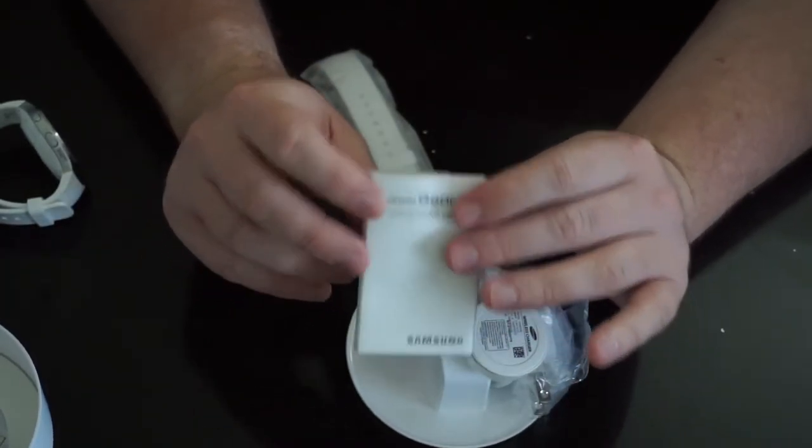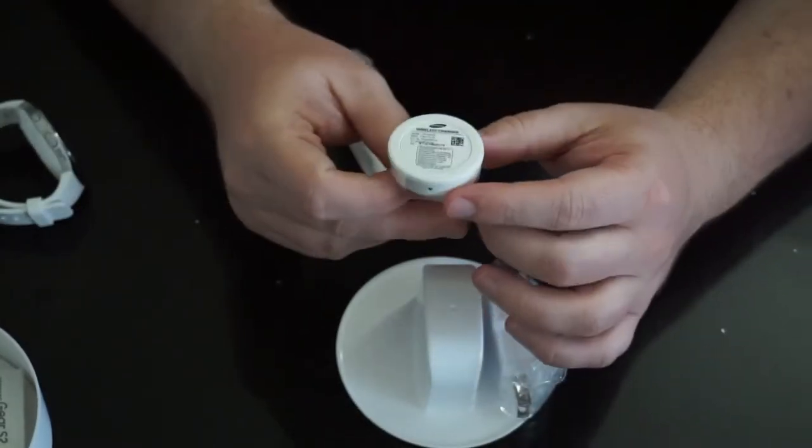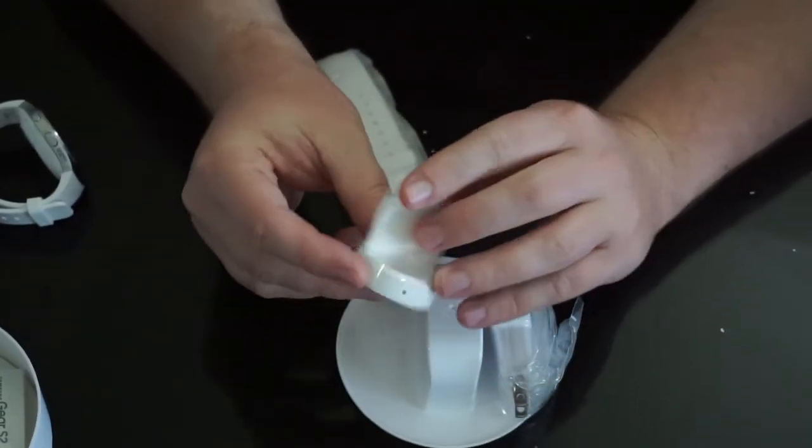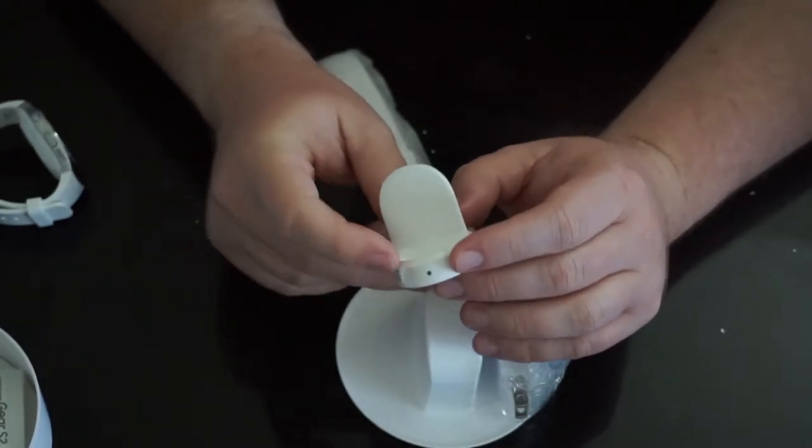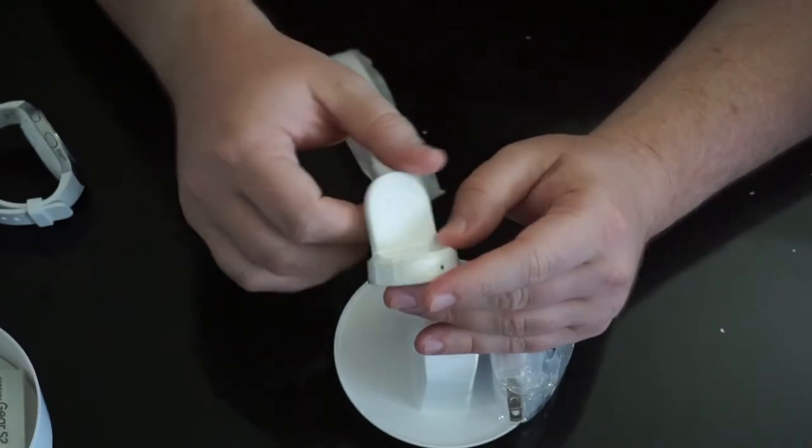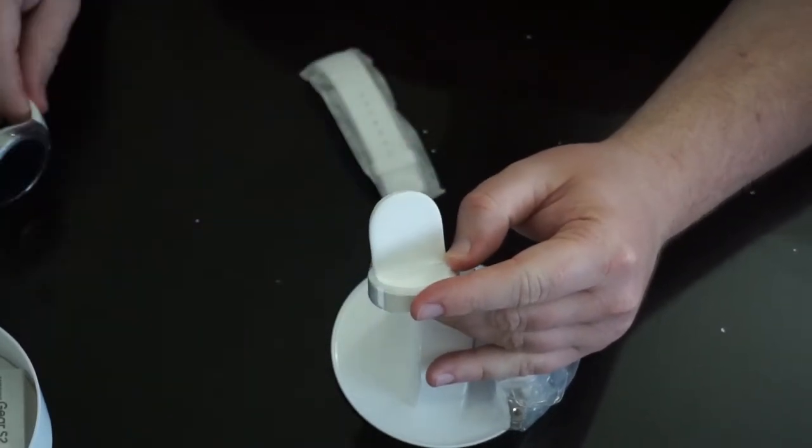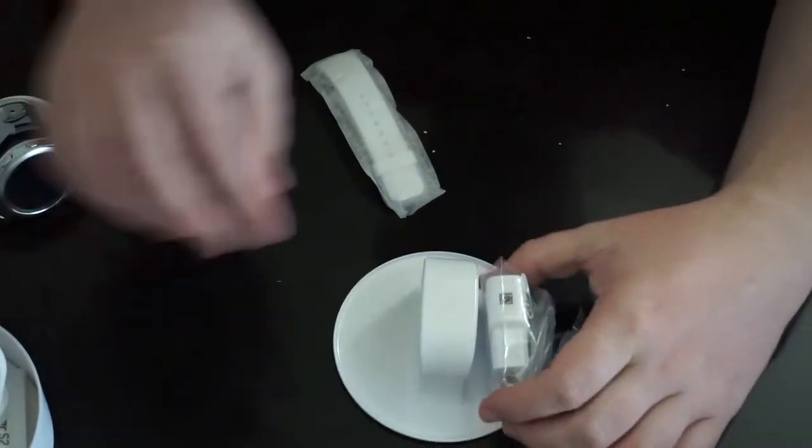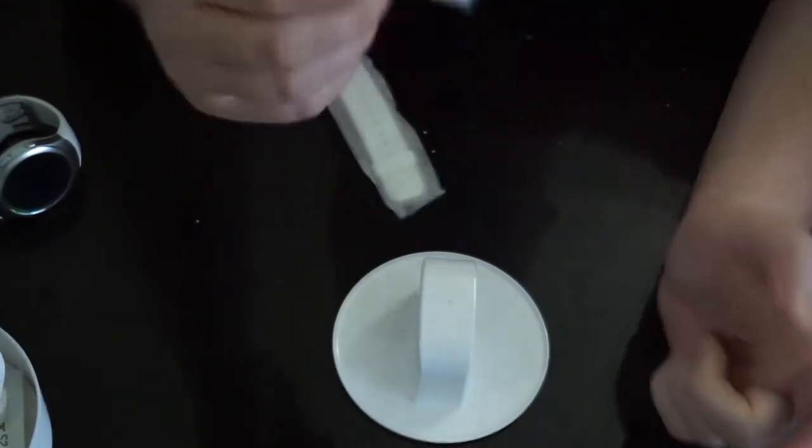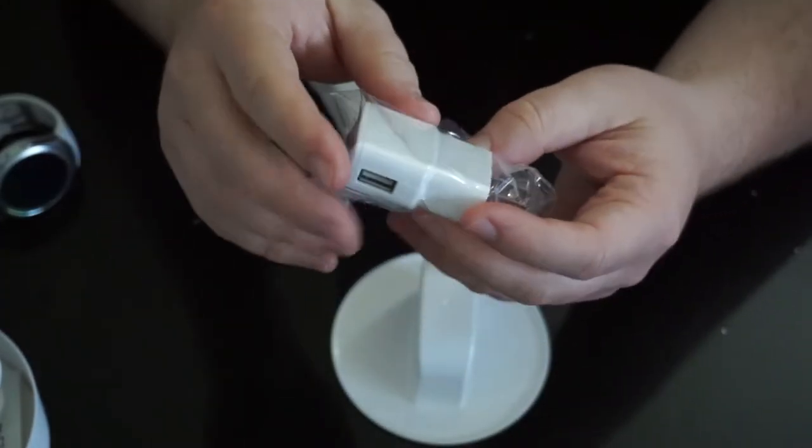Looks like a little packet of tissues or something. Then you have this, look how little tiny this is. This is the wireless charging dock for your little watch. And you can plug in the little micro USB cable to that. You just put your little watch on here. That's so cute.